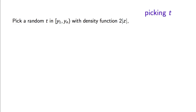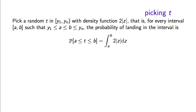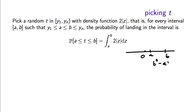So we are going to pick t at random. We need a slightly complicated distribution. We pick it in such a way that if you are looking at some positive interval, say from a to b, the probability that the threshold t falls between a and b is b squared minus a squared.